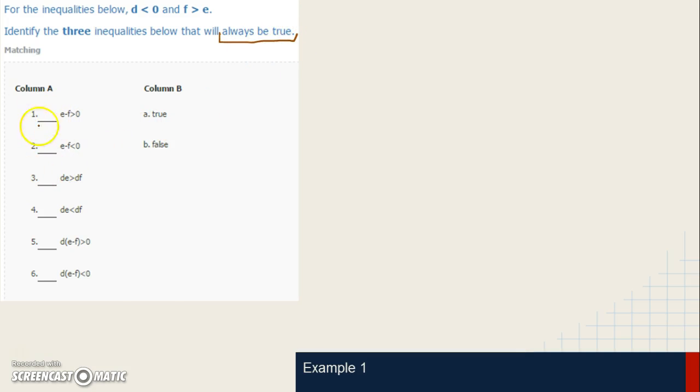Identify the three inequalities below that will always be true. So here we have a list of six and we have to identify which ones will always be true. And what this is referring to is no matter what numbers are used for D, F, and E, as long as they satisfy the inequality, they will always be true down here. Very similar to the way we solved or figured out equivalent equations and equivalent expressions with area.